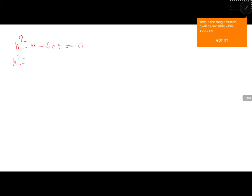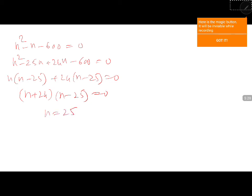Factorize this, n square minus 25n plus 24n minus 600 is 0. So n into n minus 25 plus 24 into n minus 25 is 0, n is equal to 25. Since n cannot be negative, therefore, number of days it is finished is equal to 25 days.